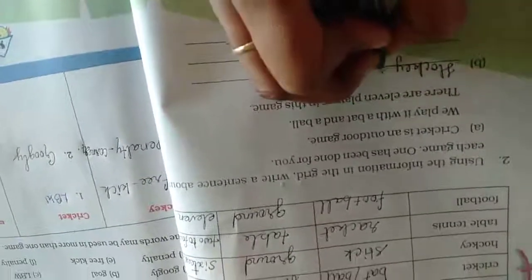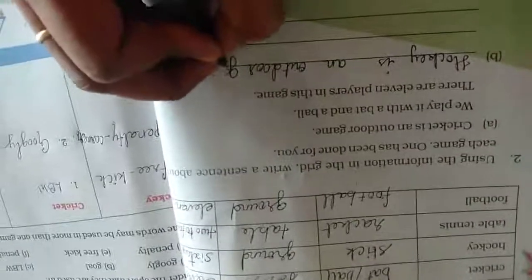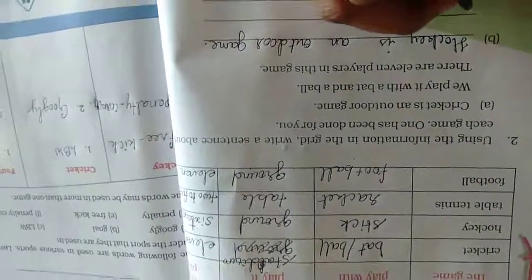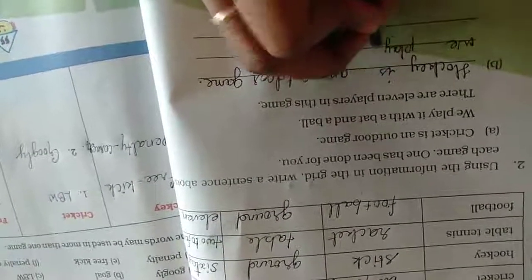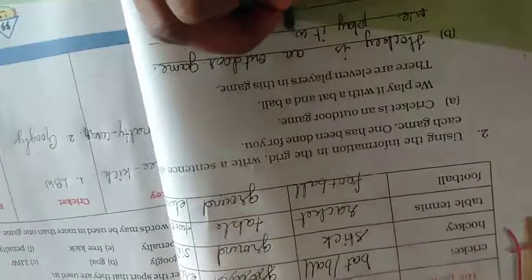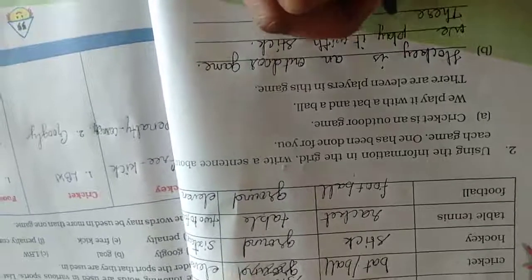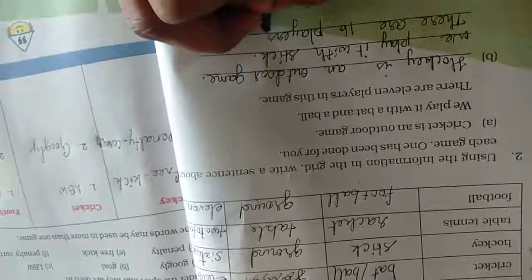Hockey is an outdoor game. Outdoor means outside. We play it with stick. There are sixteen members or players in this game.